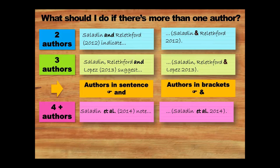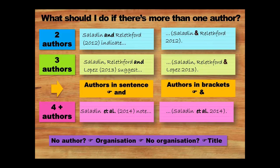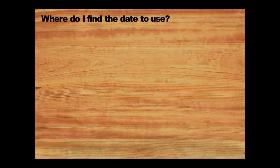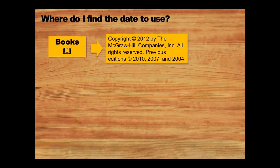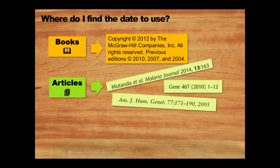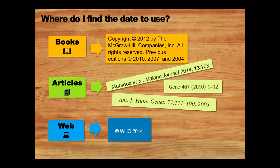If there's no author listed for a work, use the organisation's name, or if there isn't one, the title of the work. When finding the date for a citation, for a book look for the copyright symbol in the first few pages — you need when the edition you're using was published; ignore dates of previous editions and reprints. For journal articles, the date is usually on the first page. On websites, note the most recent update date at the bottom. If there's no date listed anywhere, write n.d., meaning 'no date.'